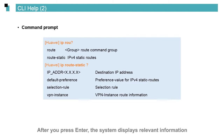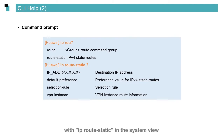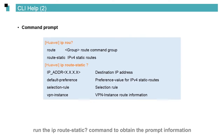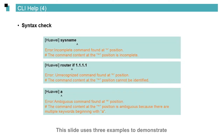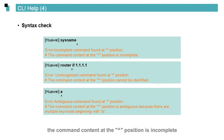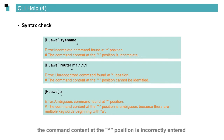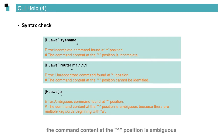After you press enter, the system displays relevant information to remind you of the desired command. If you want to enter a command beginning with IP route static in the system view but forget some content, run the IP route-static? command to obtain the prompt information. This slide shows the command supplement function. This slide uses three examples to demonstrate the command syntax check function. In the first example, the command content at the caret position is incomplete. In the second example, the content is incorrectly entered and cannot be identified. In the third example, the content is ambiguous because there are multiple keywords beginning with A.